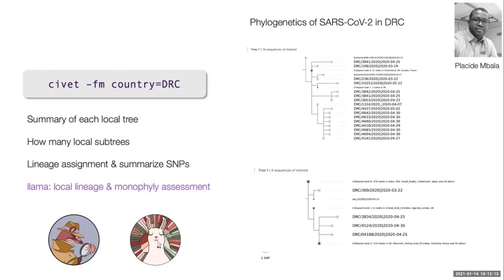This analysis can be done with CIVET, which is intrinsically linked to CLIMB right now, or with LLAMA — a generalization of CIVET geared towards surveillance and summarizing lineage content.